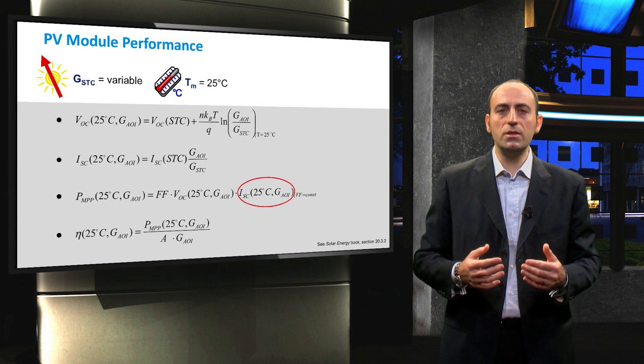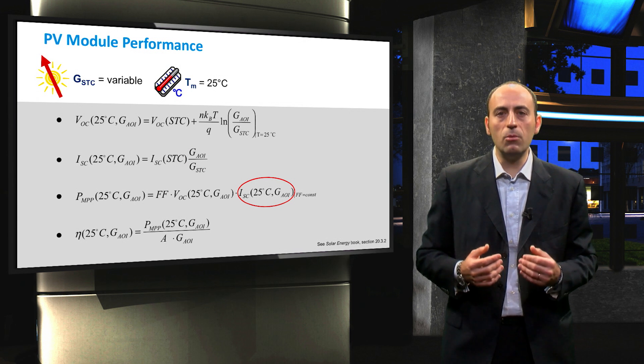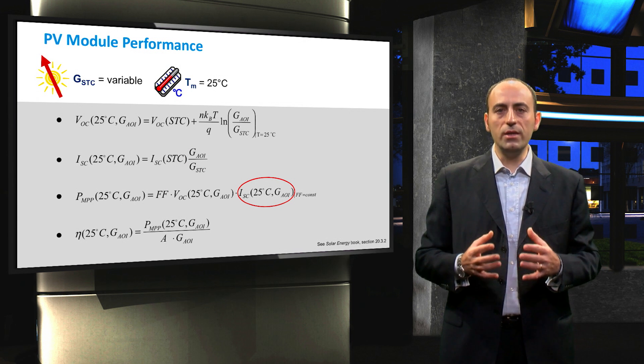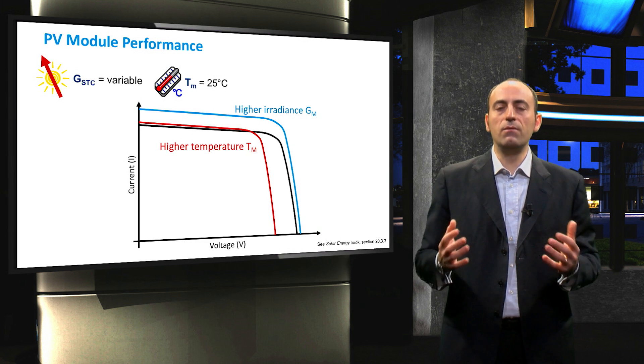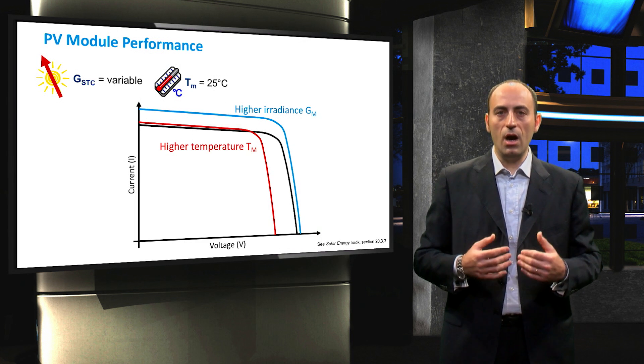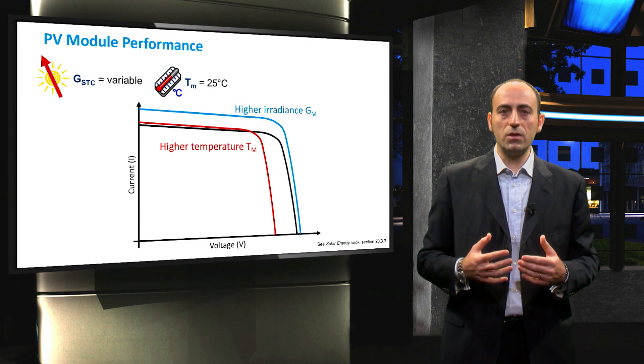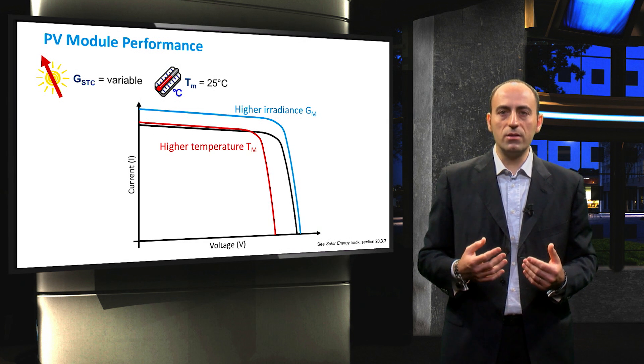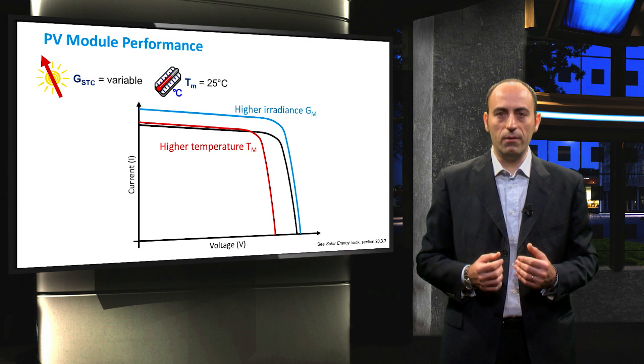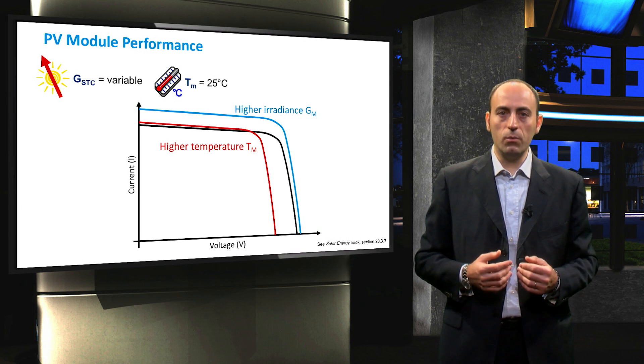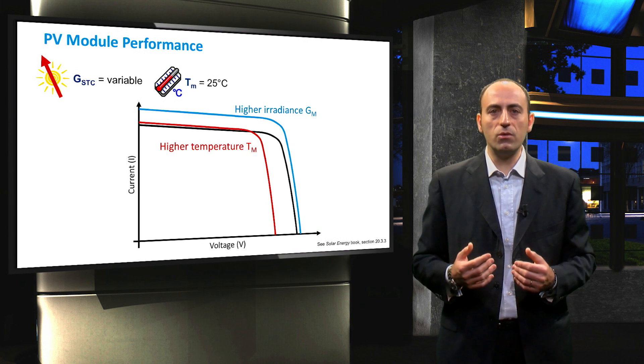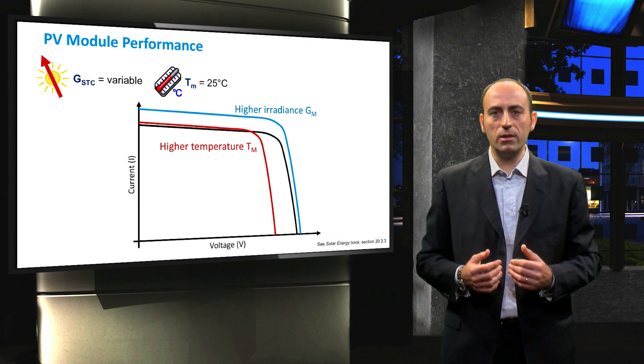Consequently, the efficiency is obtained from the maximum power point as a function of the incident irradiance. Looking at the current voltage characteristic in case of higher irradiance, we notice the positive effect of higher irradiance values on the blue line here. The short circuit current increases proportionally with irradiance, while the open circuit voltage increases with logarithmic scale.